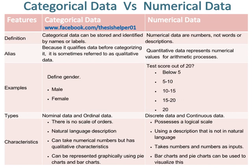Examples of categorical data include defined gender: male, female. Whereas examples of numerical data include test scores out of 20: below 5, between 5 to 10, between 10 to 15.